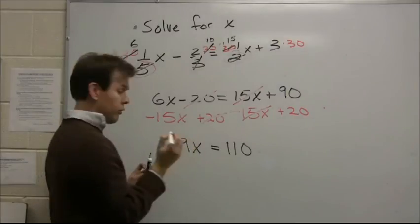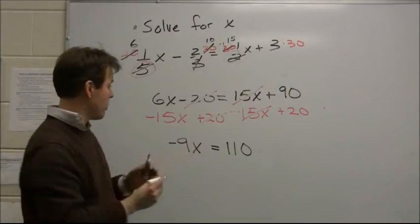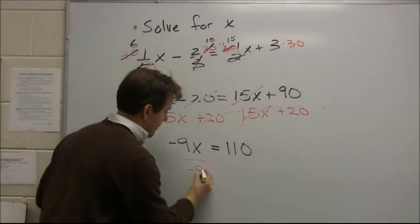One more step. We've got negative nine x equals 110, so divide through by negative nine.